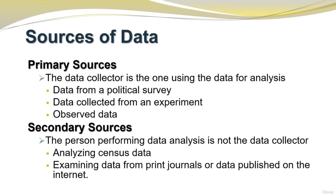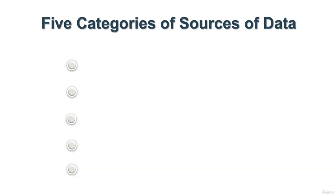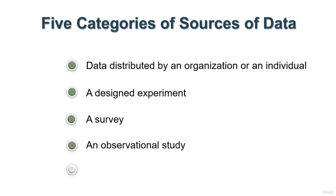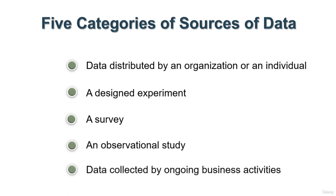There are primary and secondary sources of data. In primary sources, the data collector is the one using the data for analysis — for example, data from a political survey, a designed experiment, or observed data. In secondary sources, the person performing data analysis is not the data collector — for example, analyzing census data, examining data from print journals, or data published on the internet. Five categories of sources of data are: data distributed by an organization or individual, a designed experiment, a survey, an observational study, and data collected by ongoing business activities.